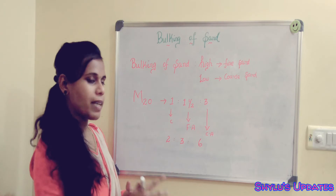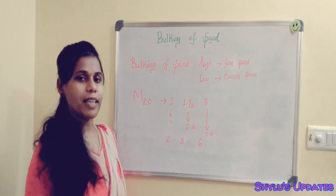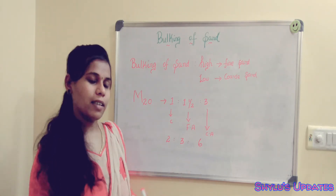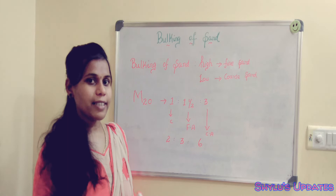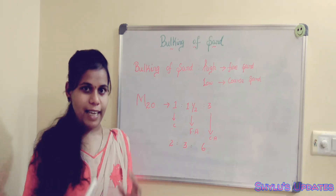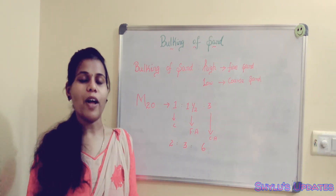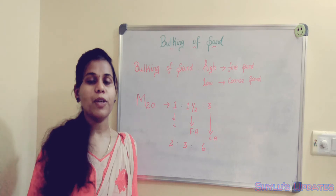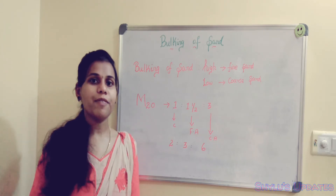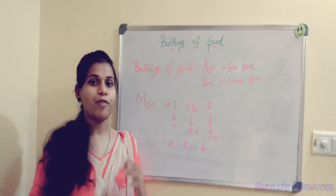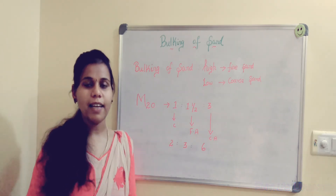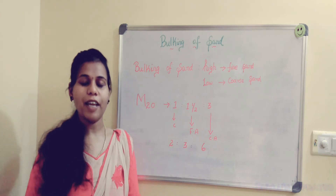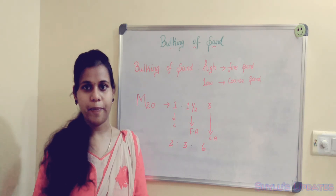When we mix this together, sometimes you can see at the site that the laborer adds some extra amount of sand. This technical term is called bulking of sand, or bulkage of sand. If bulkage of sand is present, we add some extra amount of sand up to a certain percentage, and there is a rule for that.